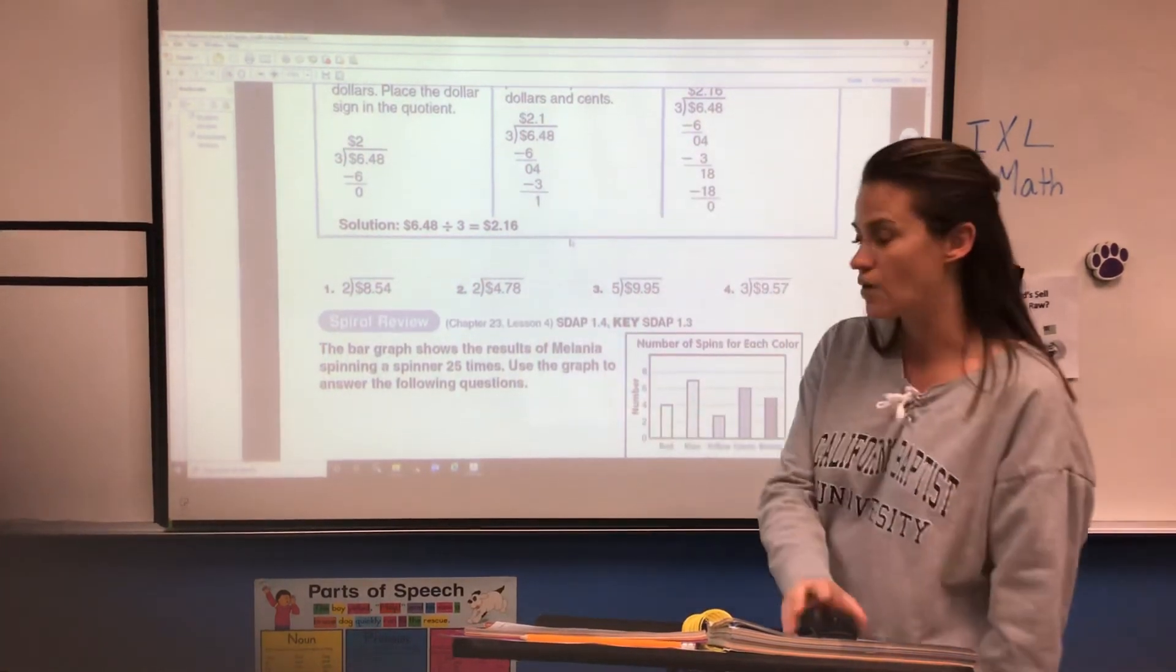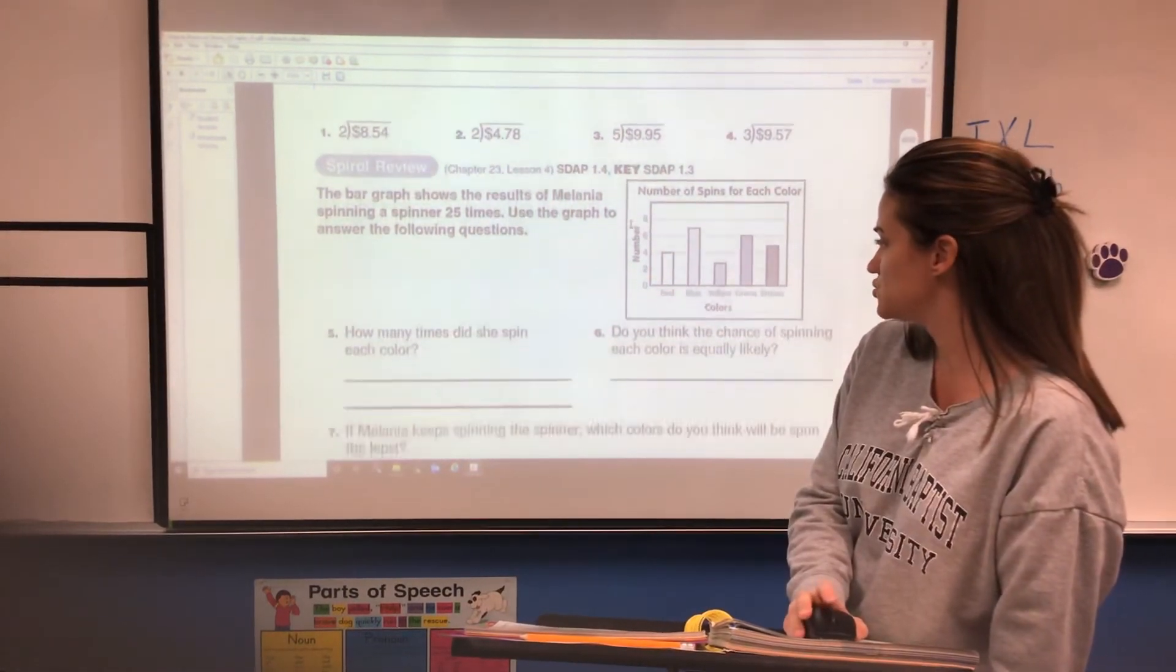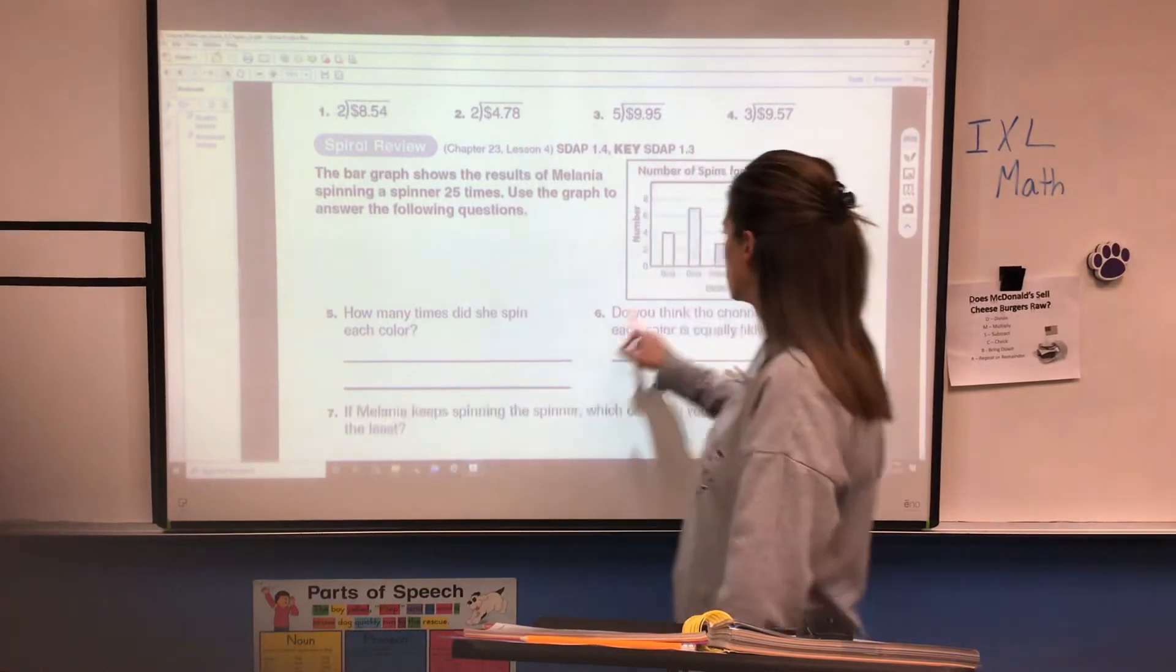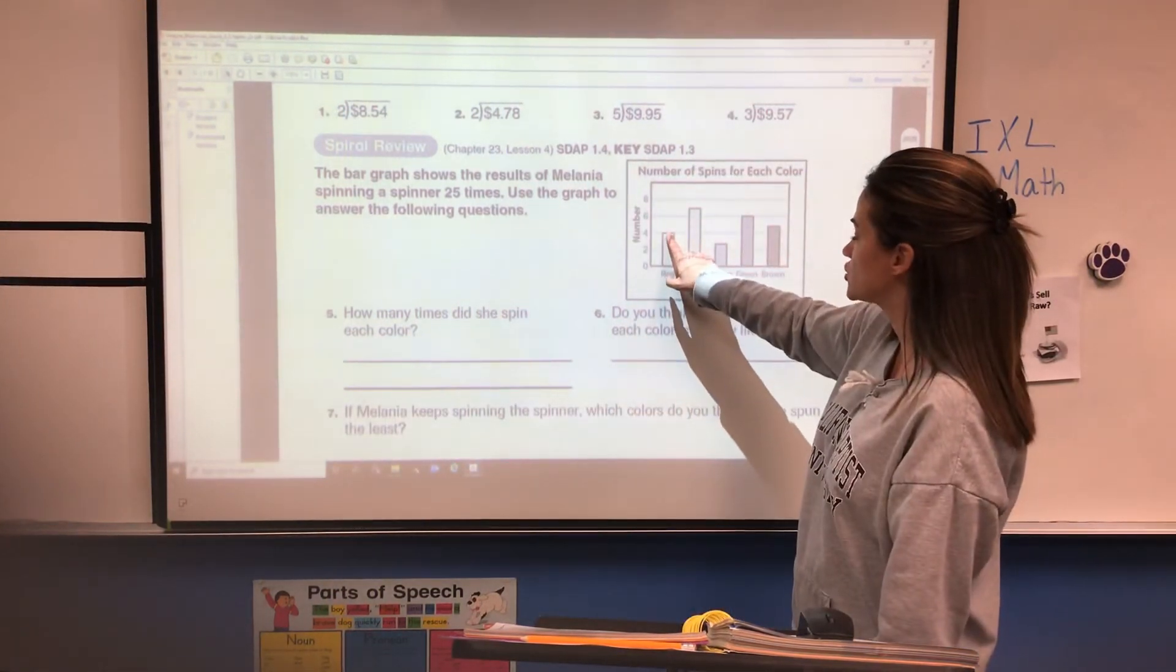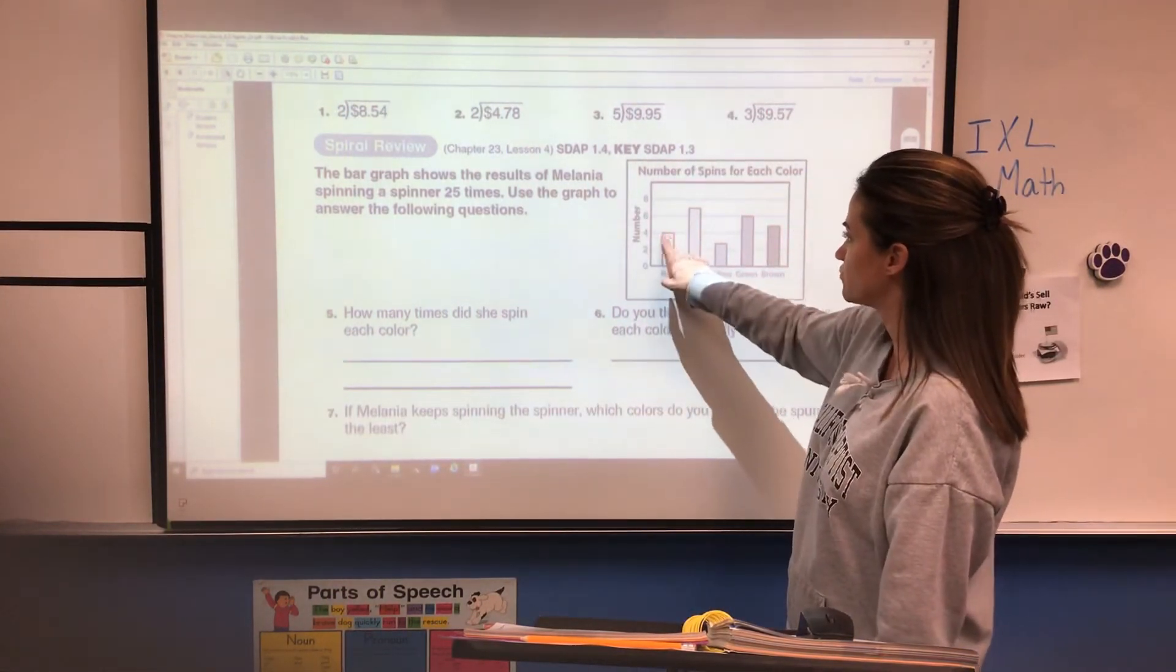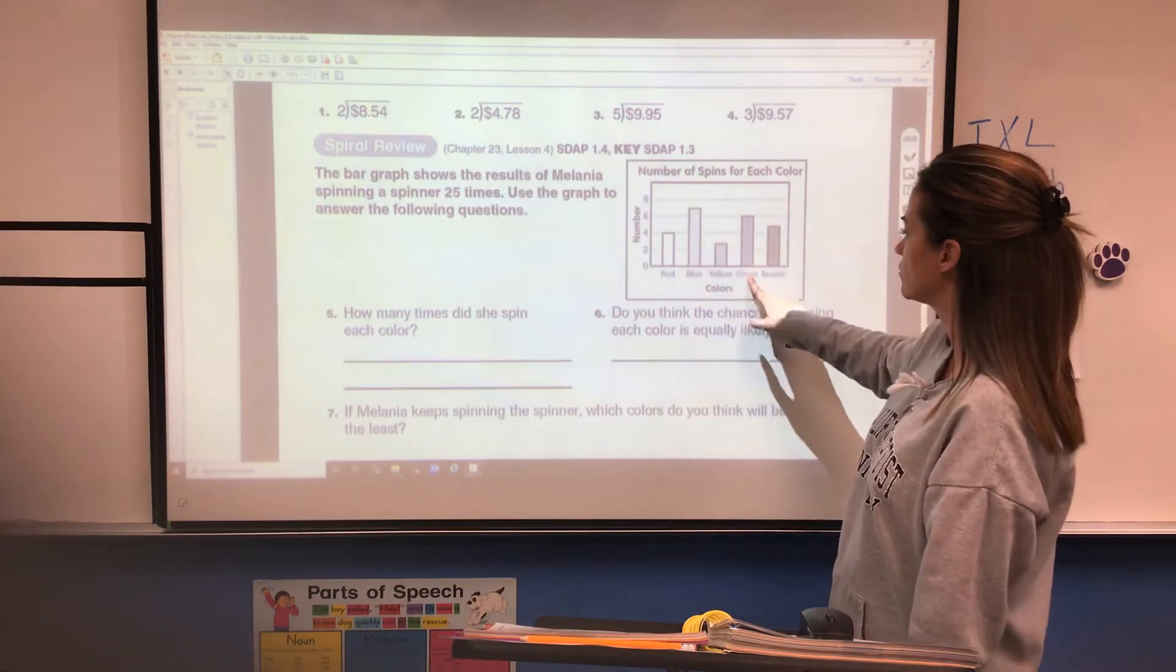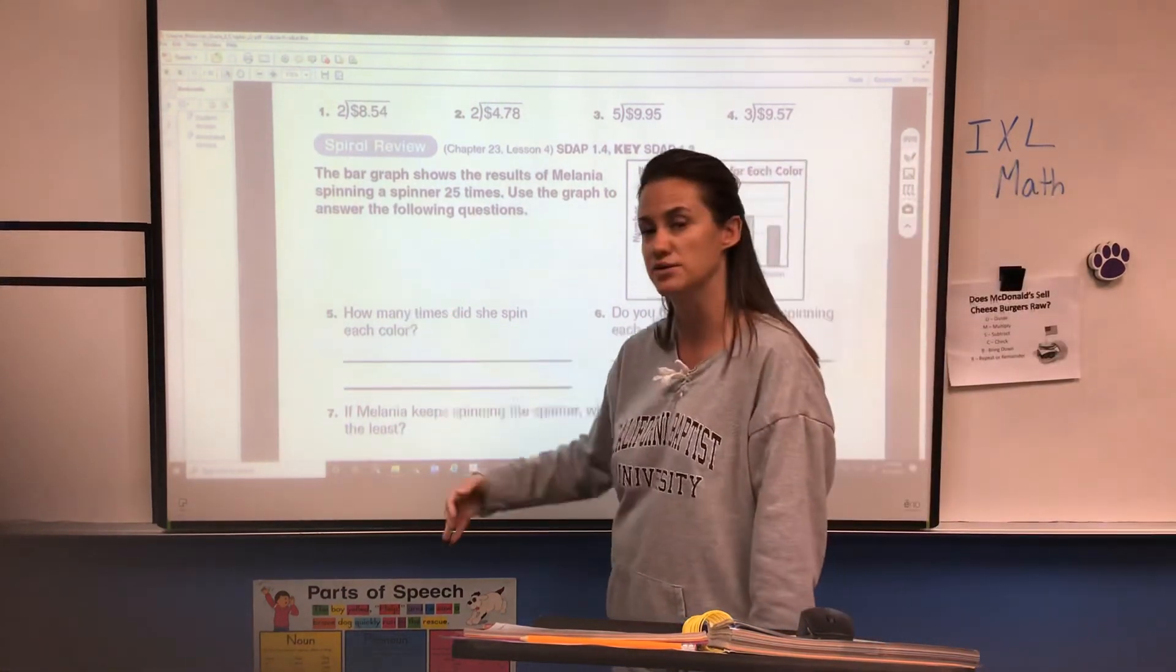Down here is the graphing for spiral review. It just wants you to read the graph. It says how many times did she spin each color. Go up on your graph chart and see where red went. Red was spun four times. How many times was yellow, green, brown. You're going to list those. And then make sure you do the six word problems on the back.